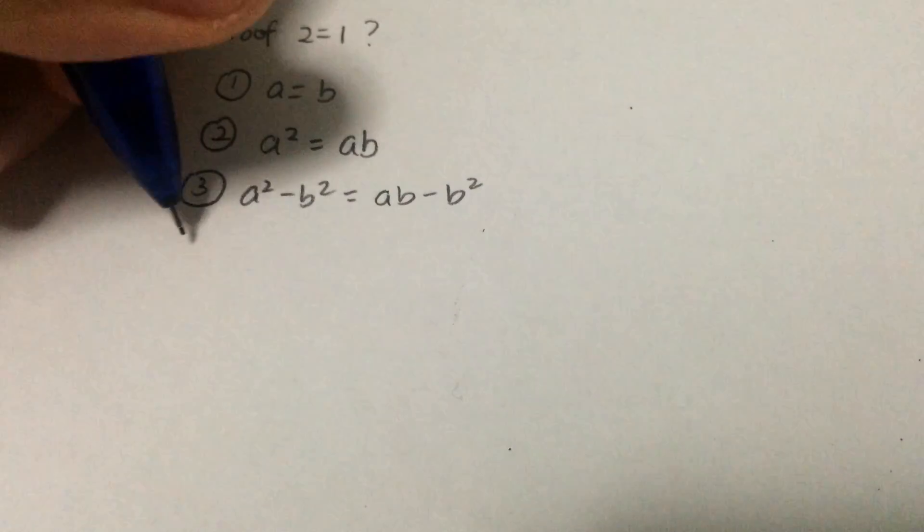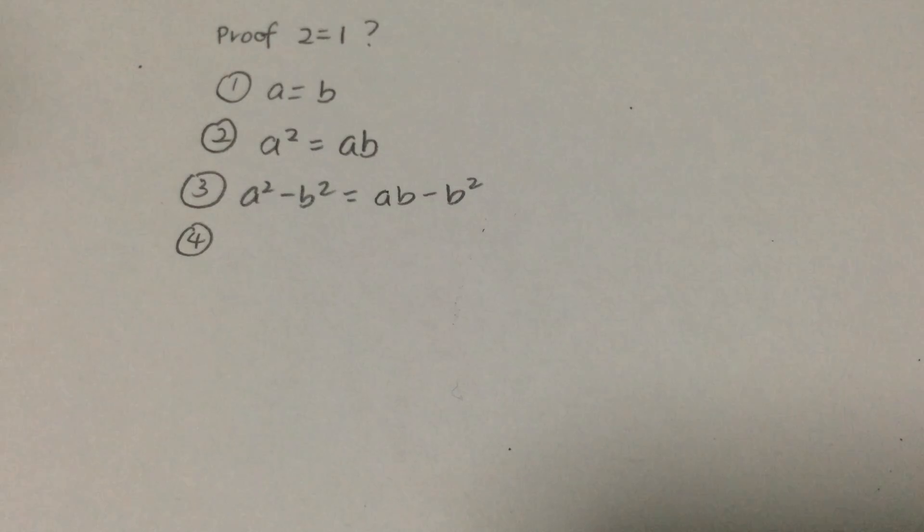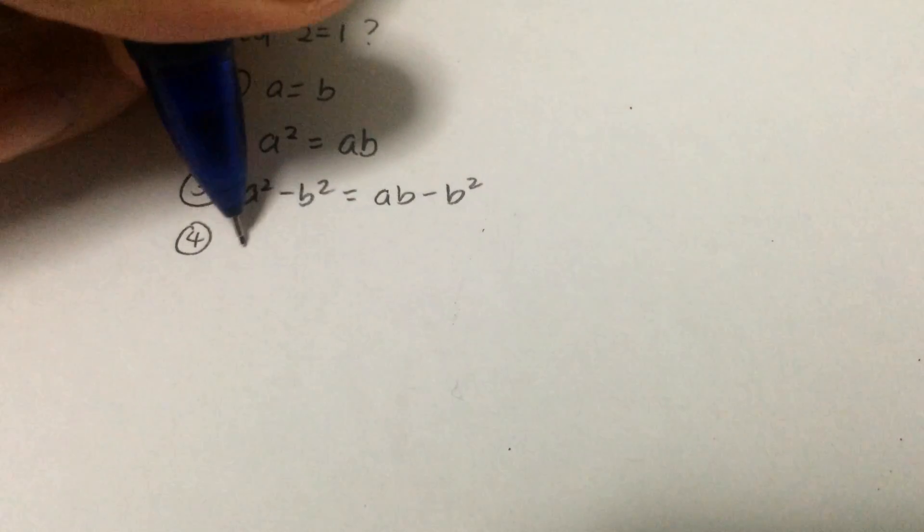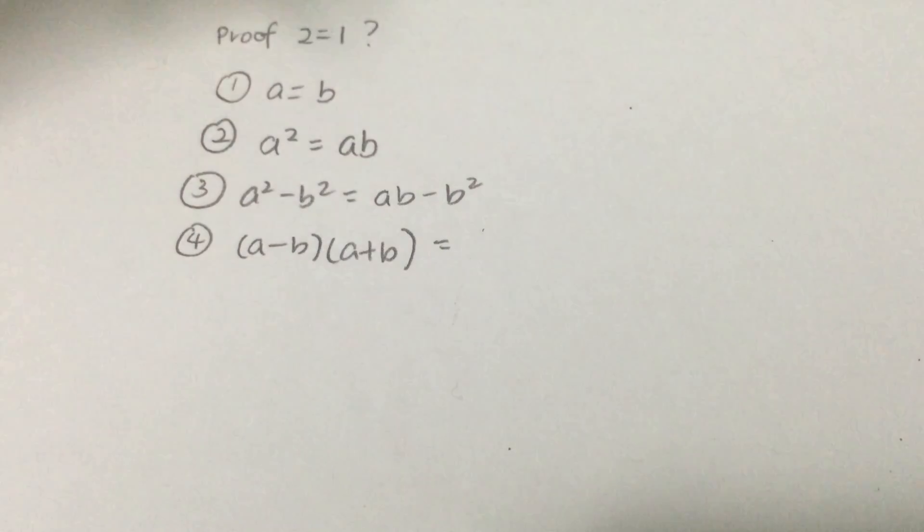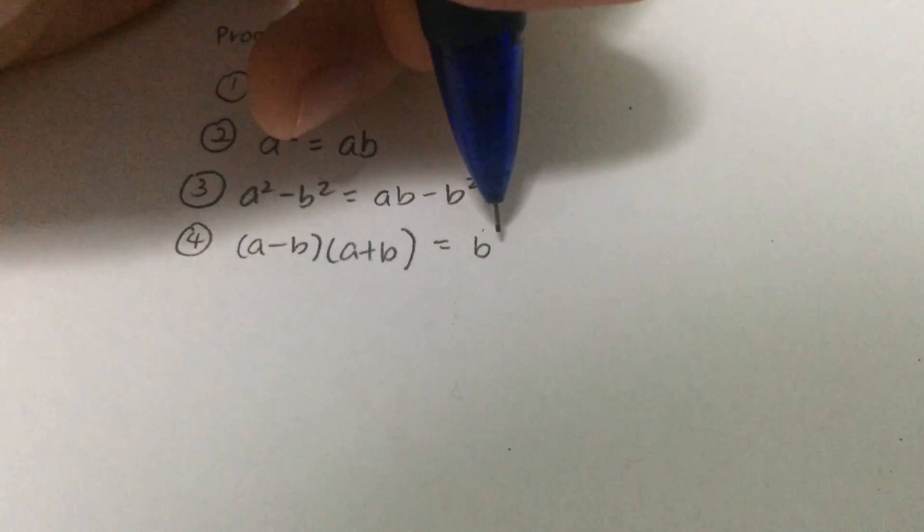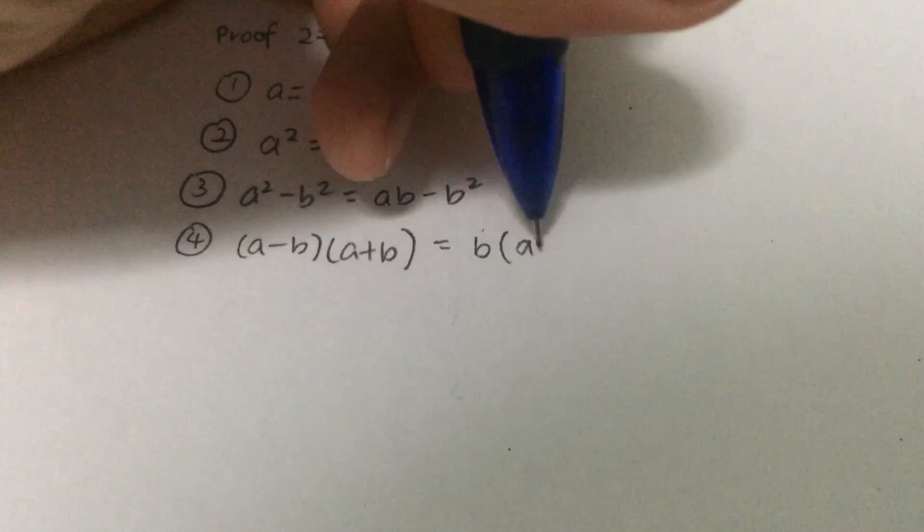And after that, what I do was I factorize both sides by a minus b, a plus b on the left hand side, while the right hand side is just taking out the b. So we have b bracket a minus b.